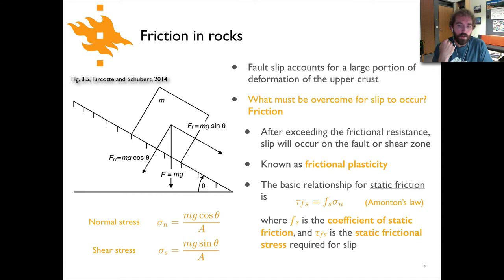Now the basic relationship we can work with looks like this where we have tau fs. This is a shear stress, referred to as the static frictional stress. This is what needs to be overcome in order for fault slip to occur. And we say tau fs equals fs, which is a coefficient of static friction, times the normal stress. The normal stress would be the component of the stress between, for instance here, this block sitting on an inclined plane. The component of the weight of that block that acts perpendicular to the surface is the normal stress. So you can see here fn is simply mg times the cosine of theta, and then the shear component would be mg times the sine of theta.